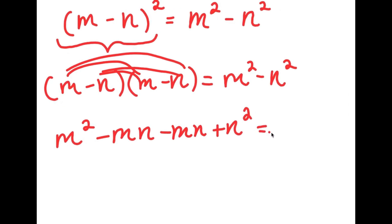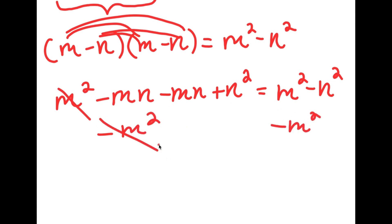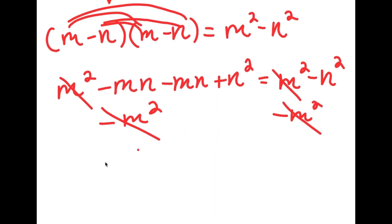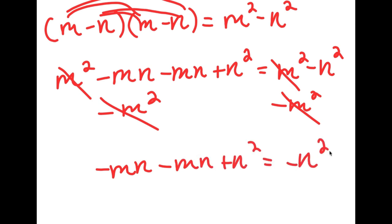So I have this is equal to m squared minus n squared. Now I can do a few things here. I can first start by subtracting m squared on both sides, so these two m squareds cancel out. Now I'll be left with negative mn minus mn plus n squared is equal to negative n squared.